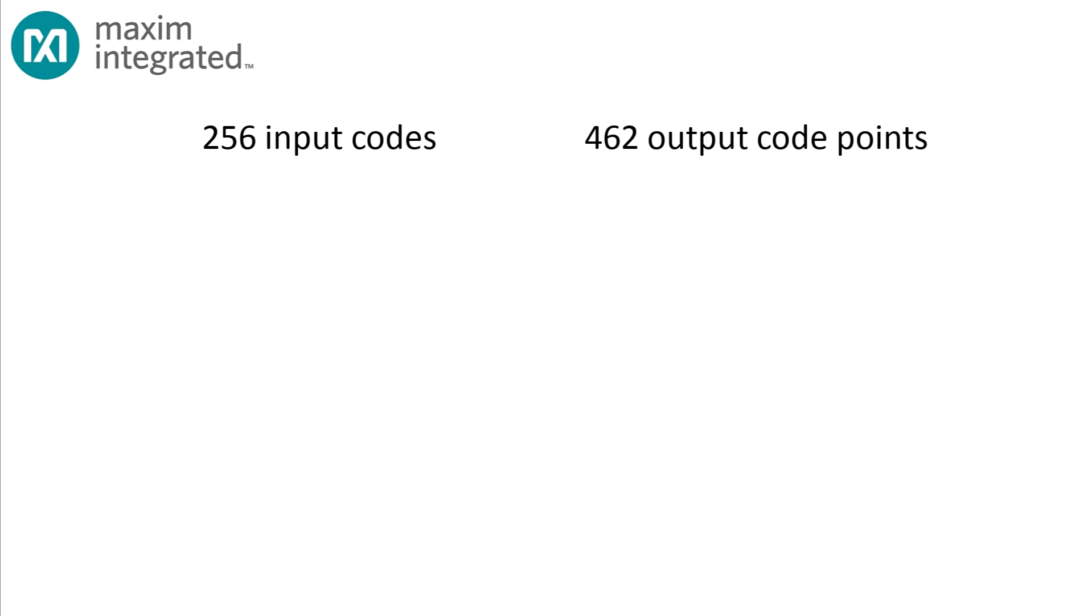So, 256 input codes and 462 possible code points. Well, clearly, there are going to be a few left over, and some of these codes can be used for a kind of out-of-band signaling.